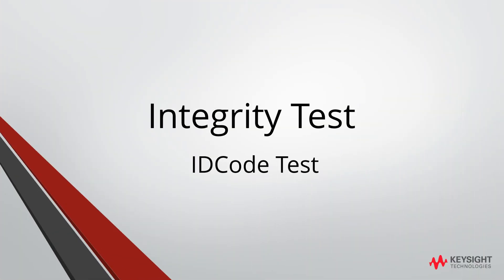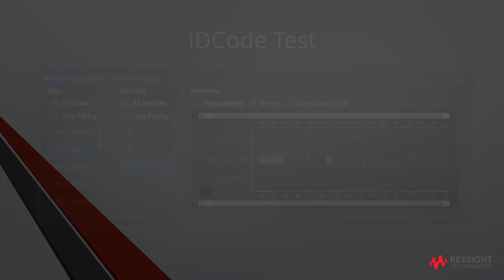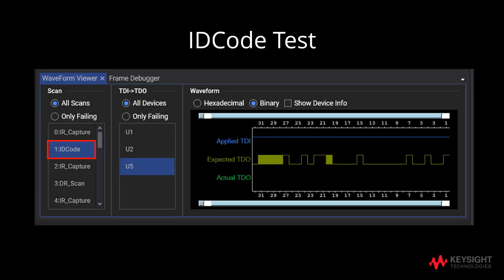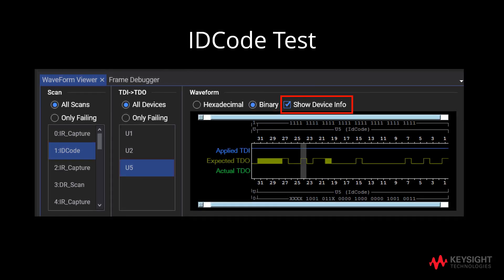As part of the integrity test, we will verify the device ID register, also known as the ID code register. This is known as the device ID test or ID code test. After clicking on ID code from scan, click on U5, then binary. Lastly, click on show device info.